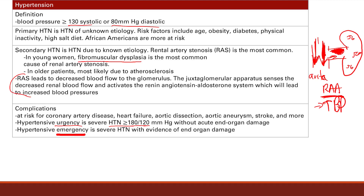End organ damage can affect any organ receiving blood flow. It can be the brain, causing neurological problems; the eyes, causing vision problems or blindness; the heart, causing too much pressure or a heart attack or heart failure because the heart can't pump against that high pressure; or the kidneys. Hypertension is a very common and very important disease to treat. We have many modifiable risk factors we can address, and when we do, we can prevent a lot of these serious complications.